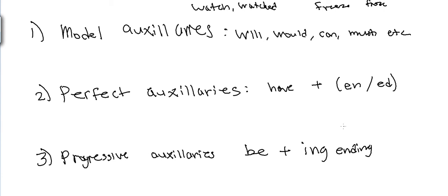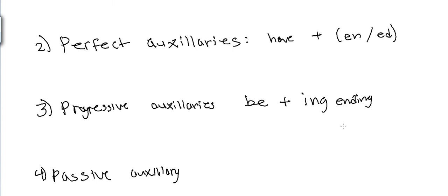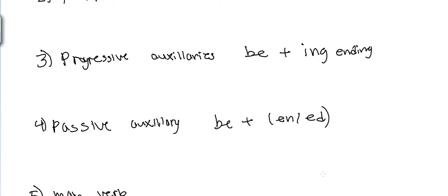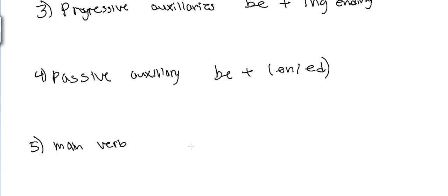Passive auxiliary: part of the verb be, plus an -en or -ed ending. Main verb such as watch.